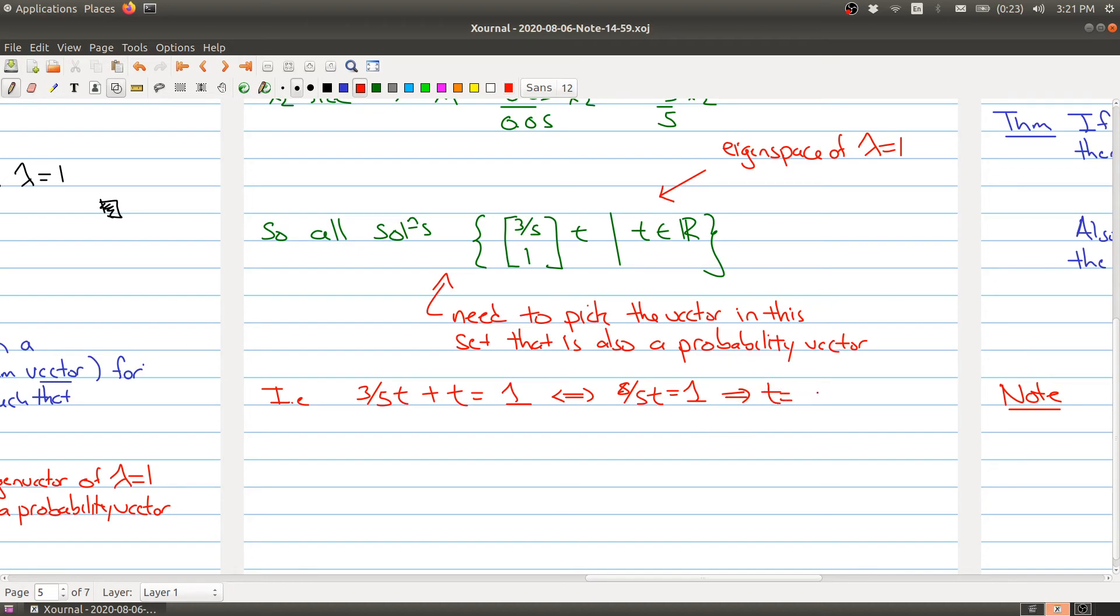Which means that T is equal to 5 eighths. So our steady state vector Q is going to be the vector that we get when we take T to be 5 eighths. So that we would have 3 fifths times one times the vector 5 eighths. This gives me the vector 3 eighths and 5 eighths.